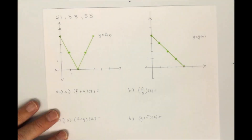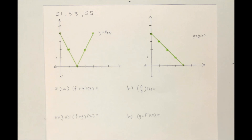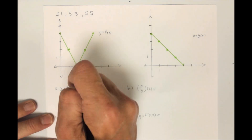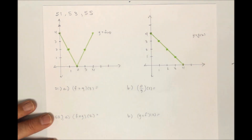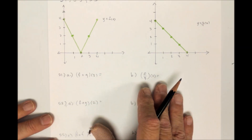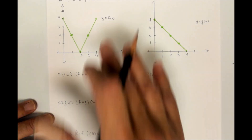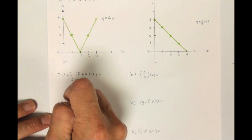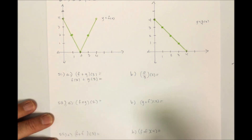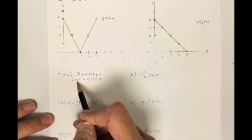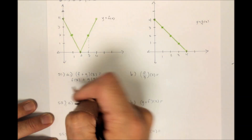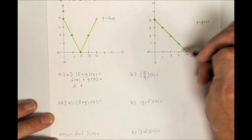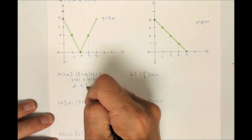The last problems use a couple of graphs — graphs of y equals f of x and y equals g of x — for problems 51, 53, and 55. For f plus g of 3, this is f of 3 plus g of 3. I don't have rules to plug in, but I can use the graph. F of 3 from the graph equals 2. G of 3 from the graph equals 1. So I have 2 plus 1, which is 3.